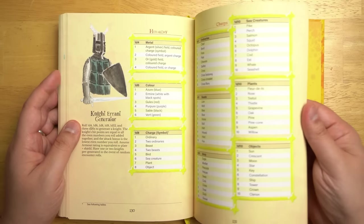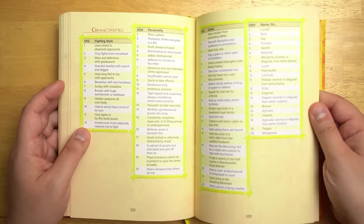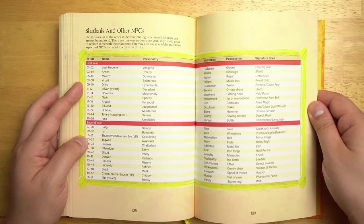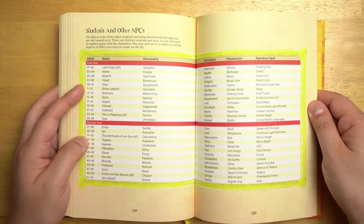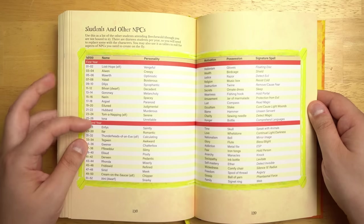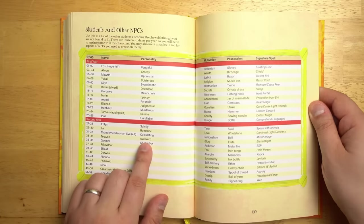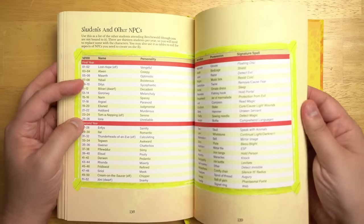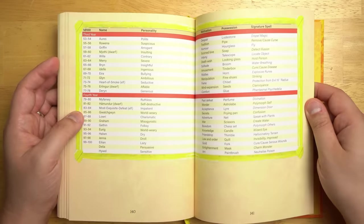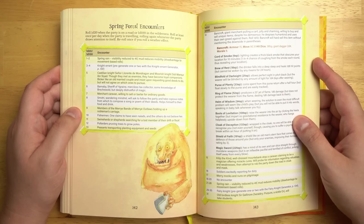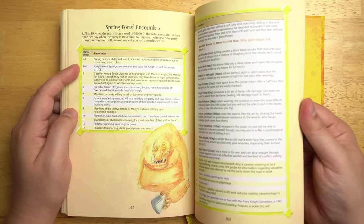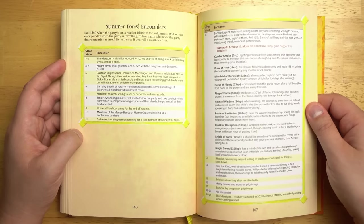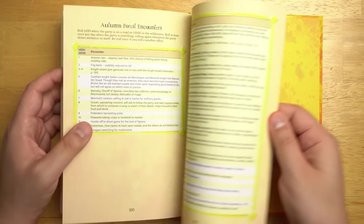There's a knight errant generator where you can generate their heraldry and their characteristics and their quest, things like that, along with fairy knight generators because those are things that you can find. Students and other NPCs. So if you just want to spend some time talking to people in the castle, the game master could roll up a couple of these people. For example, you have Thunderheads of an Eave. It's an elf. Personality is calculating. Their motivation is nationalism. Possession is a bell. And they have one signature spell. Maybe you can recruit them to come on a expedition with you if you need hirelings of a sort. The random encounter tables for the wilderness are broken down by season. And each one is a d100 table. So you have lots of different things that you can run into. You roll a d20 while you're on a road and a d100 when you go off the road. So things get a lot more strange as you go deeper into the wilderness.